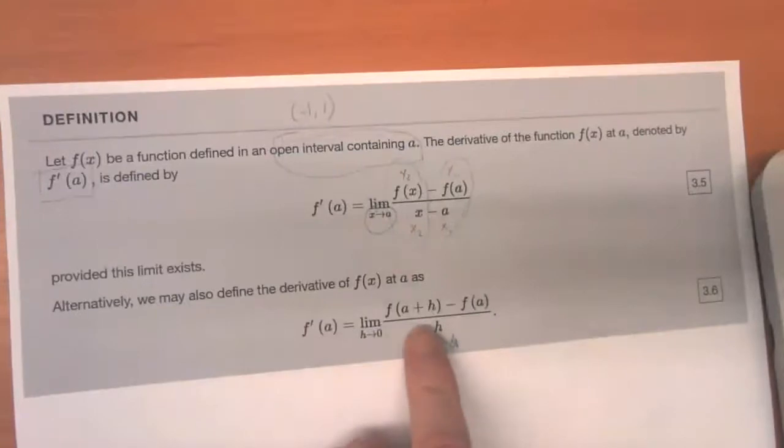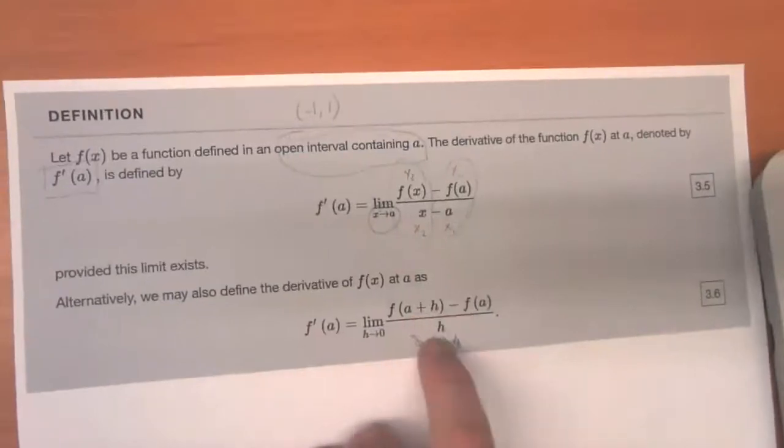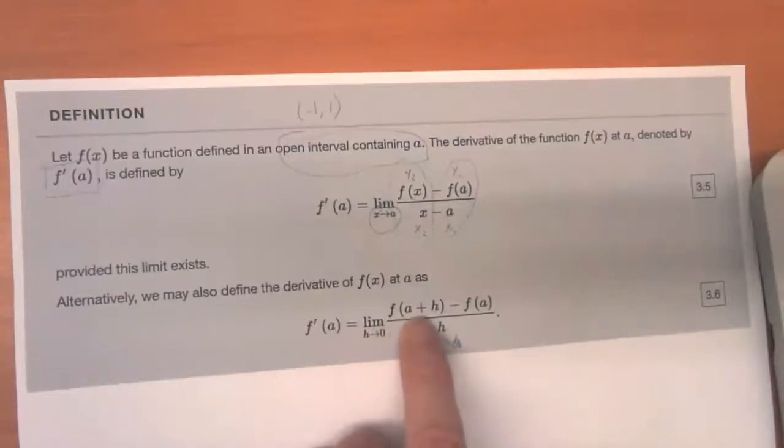In this example, we usually don't have factoring to do or the factoring is very simple, but evaluating F at A plus H may require a little bit of arithmetic.